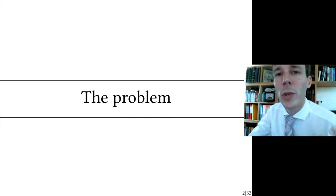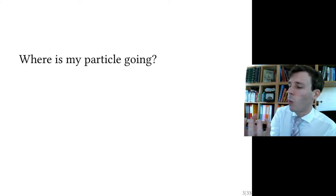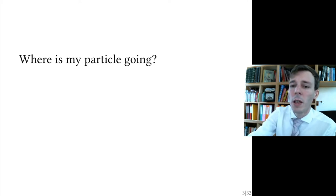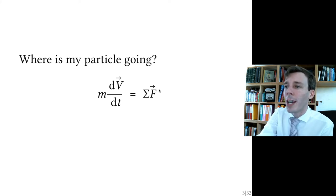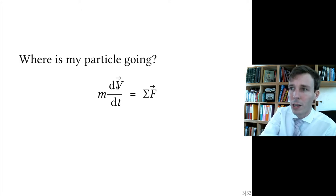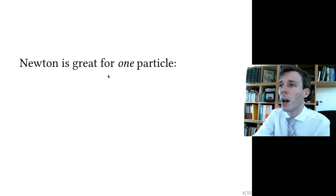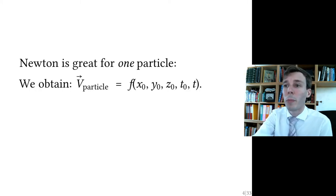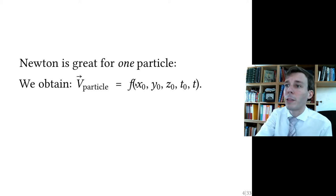We have a problem when we study fluid flow, and this problem is that it's difficult to track all the particles. When we ask ourselves where a fluid flow particle is going, we may answer it in the way that we do with solid mechanics. If you look at the movement of a satellite, for example, you would calculate the sum of forces that apply on the satellite. The sum of forces equals mass times acceleration, and acceleration is the change in time of velocity. So you could track the velocity of the satellite as it's moving around the earth. That's a very good method if you have one object, like one car or one satellite.